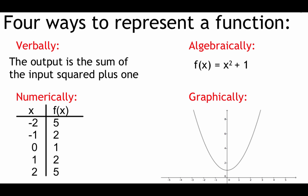There are four ways to represent a function. Verbally: the output is the sum of the input squared plus one. Algebraically: f(x) equals x squared plus one. Numerically, a table of values: negative 2 maps to 5, negative 1 to 2, 0 to 1, 1 to 2, 2 to 5. And graphically, we take those ordered pairs and graph them out.